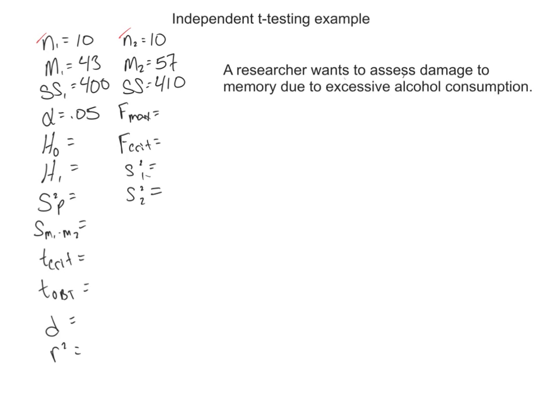The independent variable would be excessive alcohol consumption, right? This is our independent variable because we're going to, as the researcher, decide who qualifies to be excessive alcohol consumers and who doesn't. Our dependent variable would be this damage to the memory, where we're going to give them a memory test of some sort. We have a control group and an experiment group. We're going to call this first group our experiment group, and group number two as our control group.